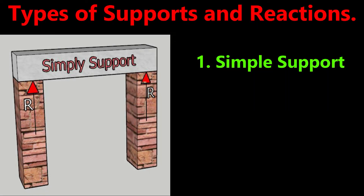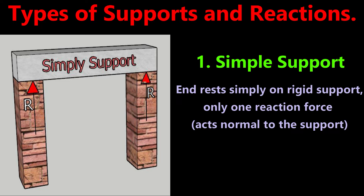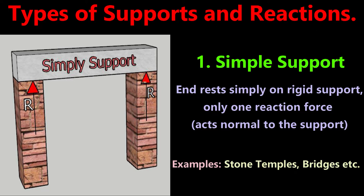1. Simple support. The end of the beam rests simply on a rigid support as shown in the figure. There is only one reaction force, and that reaction force is always normal to the support. There will not be any restraint from the support for the rotation of the end of the beam — in other words, there is no moment resistance at the support. These types of supports can be seen in bridges, ancient stone temples, and also in temporarily constructed structures.